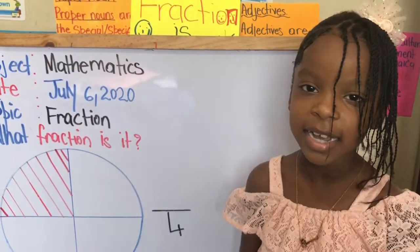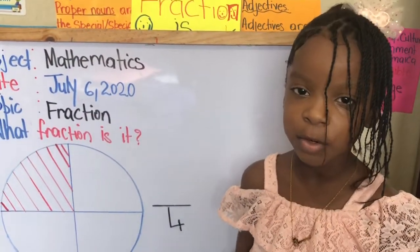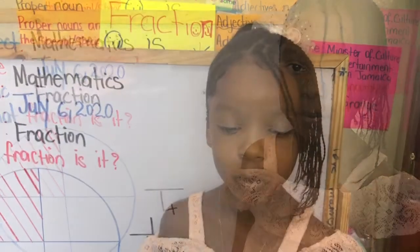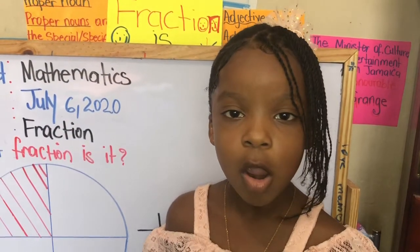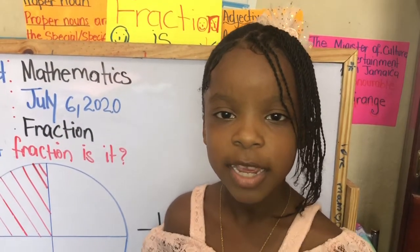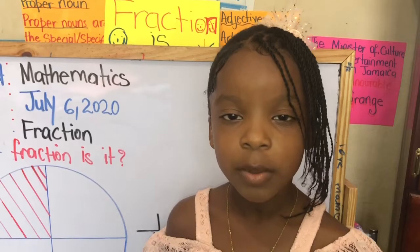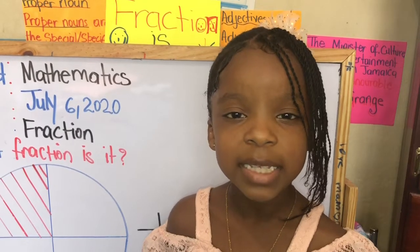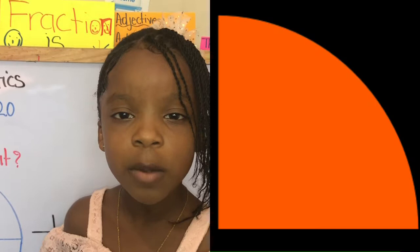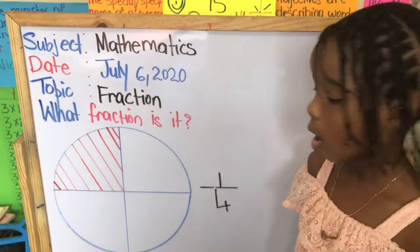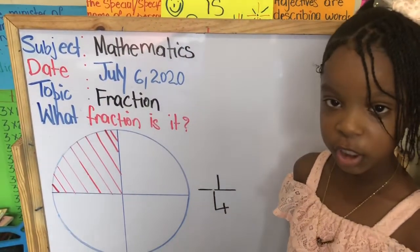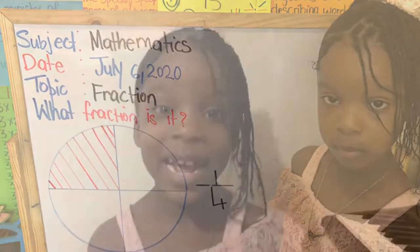Let us say I gave my sister one of the four parts. The numerator, or the top number, is one, because my sister got one part of the shape. My sister got one fourth of the shape. Let us look at this final example.